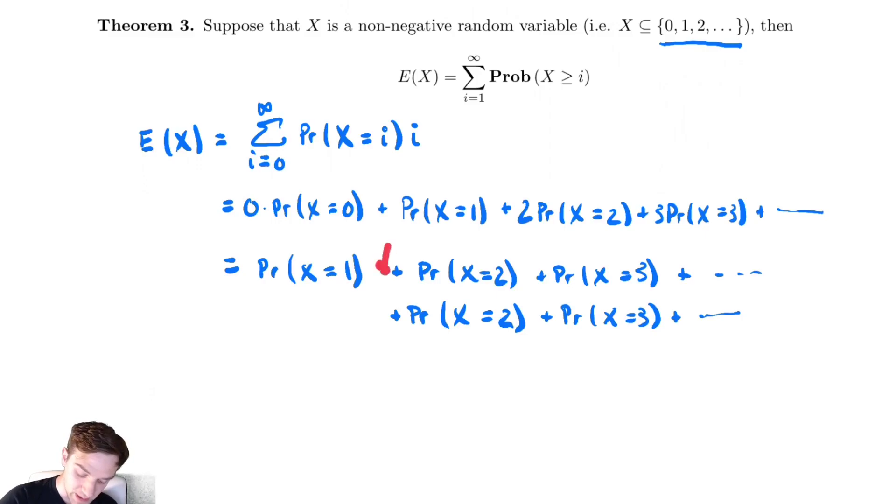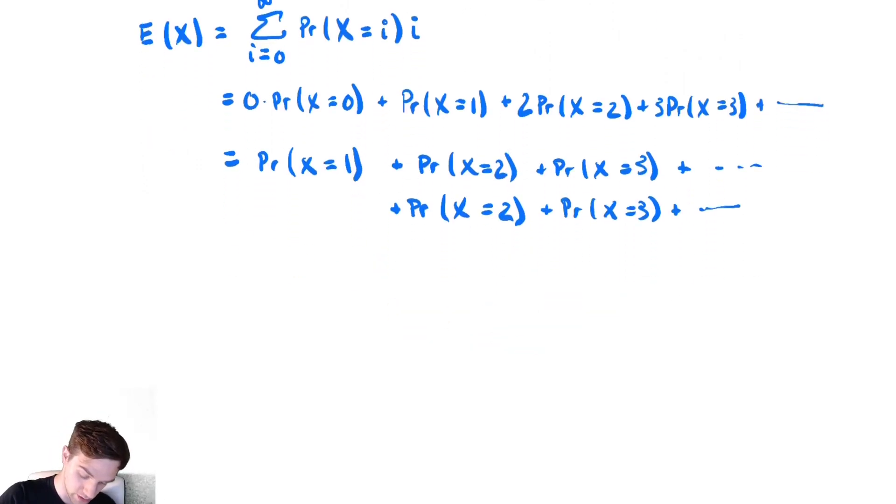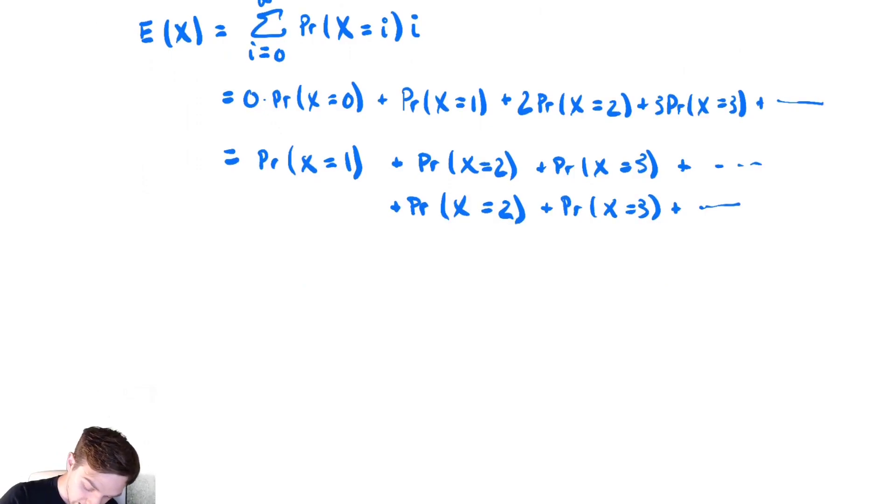And if we look, by writing it this way, I still have two copies of the probability that x is equal to 2. And then below this, I am going to write the probability that x is equal to 3 and so on. And if I repeat this process, I would have three copies of the probability that x is equal to 3. Then presumably four copies of the probability that x is equal to 4 and so on.